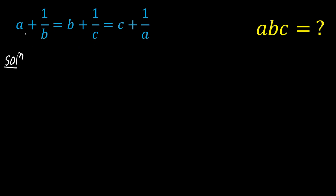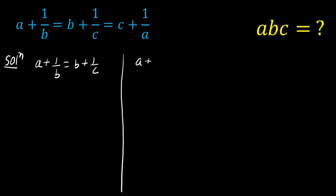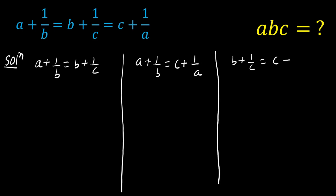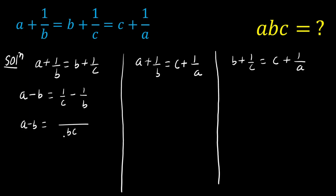First, we equate a plus 1 over b equals b plus 1 over c. Taking a and b to the left hand side gives a minus b equals 1 over c minus 1 over b. With common denominator b times c, we get a minus b equals (b minus c) over (b times c), so b times c equals (b minus c) over (a minus b). This is equation number one.